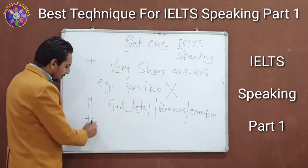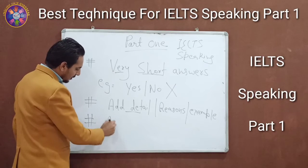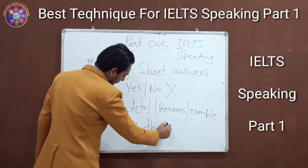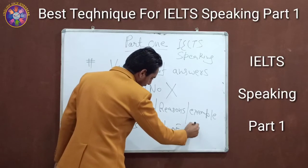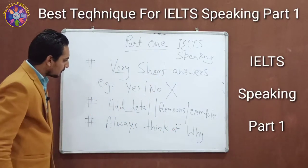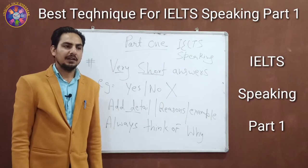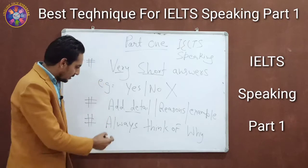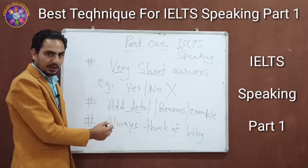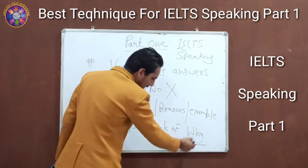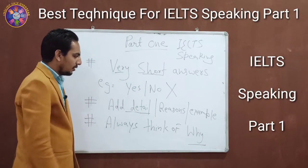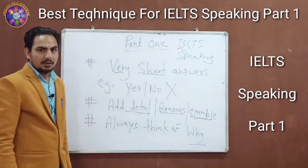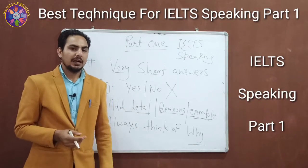We can do this by always thinking of 'why'. Always think of why. For example, 'do you get up early in the morning?' Most students say 'of course I get up early in the morning,' but they don't add any detail. The real key is: yes or no — why? Add some detail like the timing, the reasons for getting up early, or an example of why you normally get up early.